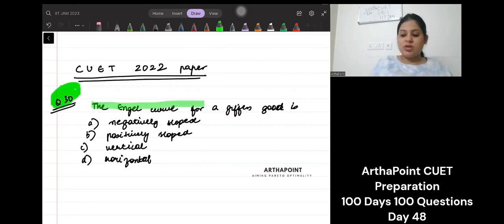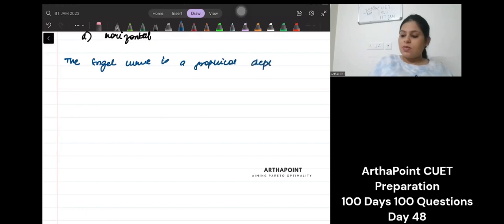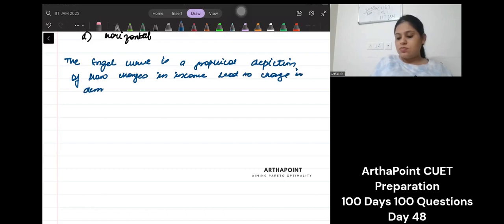It says the Engel curve for a given good is. Let us just try to write some points related to Engel curve. This will help us revise Engel curve also. The Engel curve is a graphical depiction of how changes in income lead to change in demand of good.